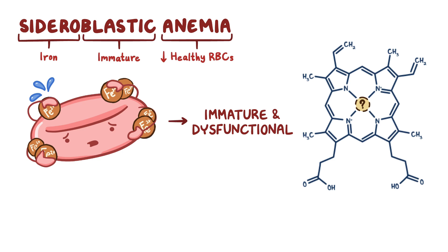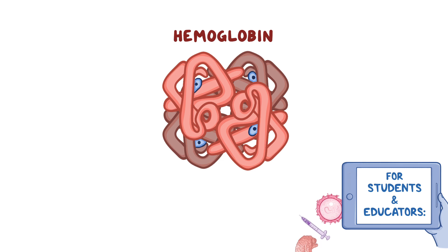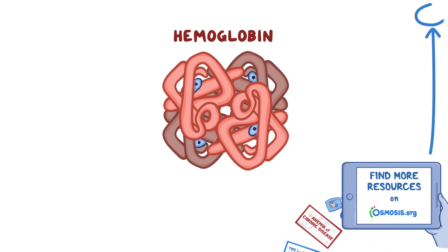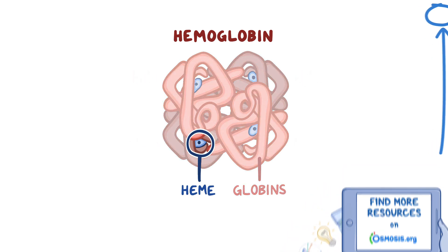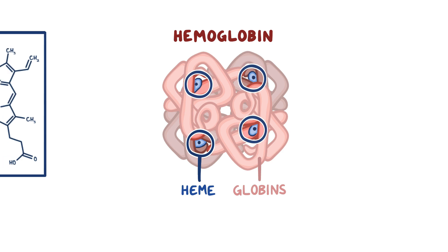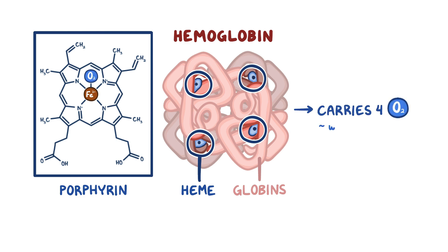In order to better understand sideroblastic anemia, we need to first take a look at hemoglobin, the main protein within RBCs that's responsible for carrying oxygen. Hemoglobin is made up of hemes and globins. There are four globin subunits, typically 2-alpha and 2-beta, and each one has its own heme group. This heme is a large molecule made up of four pyrrole subunits that form a ring, called a porphyrin. In the middle, there's an ionically bonded iron 2+, and the iron is what binds to and carries the oxygen molecule. So each hemoglobin can carry four oxygen molecules when fully saturated.